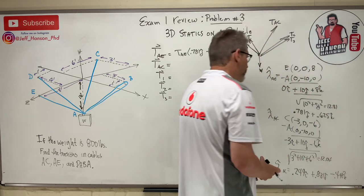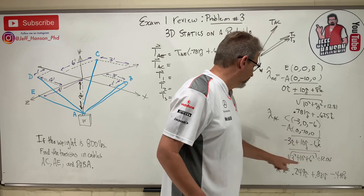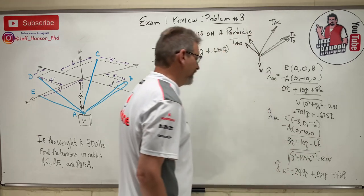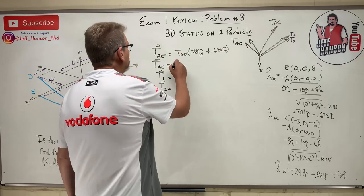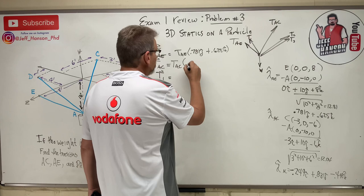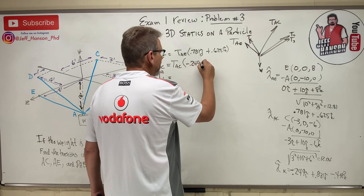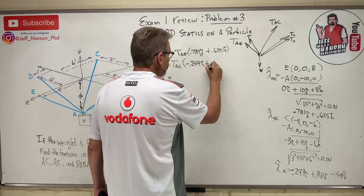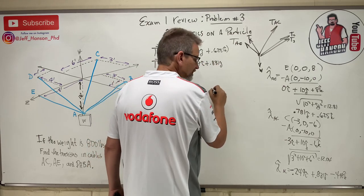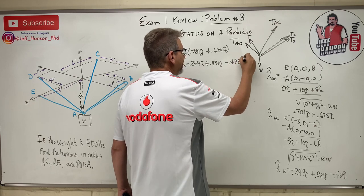Don't get the signs wrong — I almost did right there. So T_AC times (negative 0.249 i-hat + 0.831 j-hat minus 0.498 k-hat).